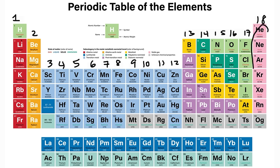Next, we have the noble gases. The noble gases are chemically inert — they're non-reactive. For the most part, they don't participate in chemical reactions; it's extremely hard to get them to react with other elements. They include helium, neon, argon, krypton, xenon, and radon.